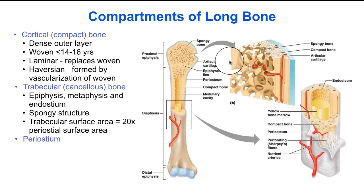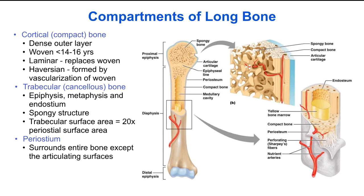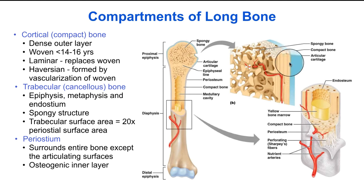The periosteum is the outer layer of the bone. It surrounds the entire bone except for the articulating surfaces where the cartilage is. It has an osteogenic inner layer where bone grows, and a fibrous outer layer to protect the bone.